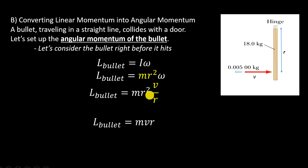I canceled out one of these r's, and I rearranged terms. The angular momentum of the bullet is simply the mass times the velocity of the bullet times r, the distance away from our hinge, from our reference, our origin point.